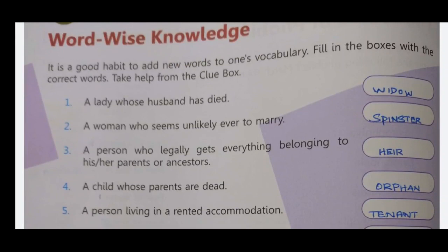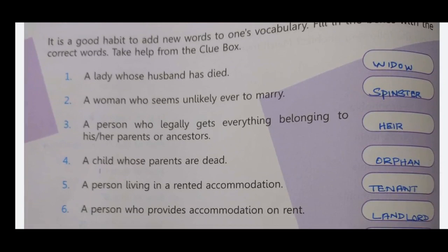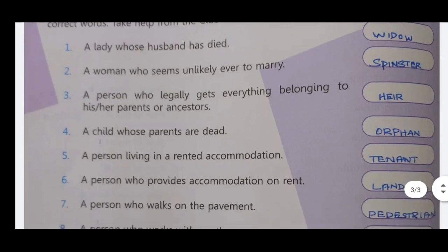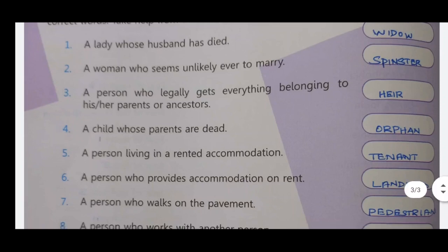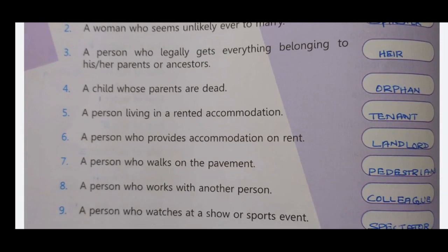It is a good habit to add new words to one's vocabulary. Fill in the blanks with the correct words — take help from the clue box. A lady whose husband has died: widow. A woman who seems unlikely ever to marry: spinster. A person who legally gets everything belonging to his grandparents or ancestors: heir. A child whose parents are dead: orphan.